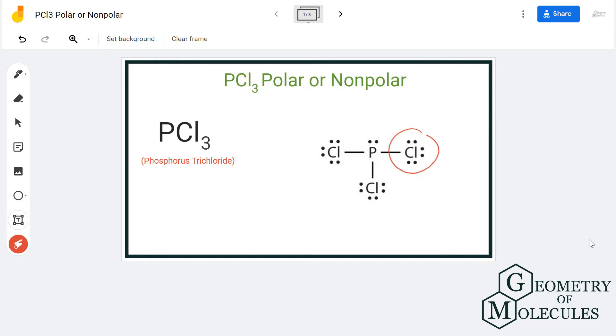see that three chlorine atoms are forming a single bond with a phosphorus atom, but the symmetry of this molecule is not symmetric as there are two chlorine atoms on this side but there is only one chlorine atom here. So because of this asymmetric molecular geometry of this molecule, there are chances that this molecule could be polar. To understand it better, we can